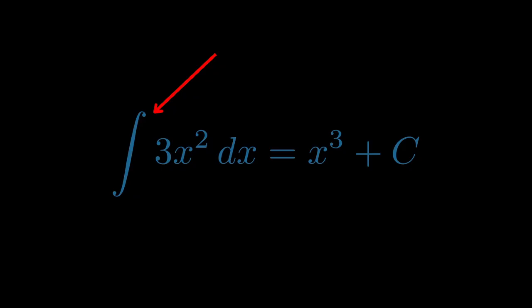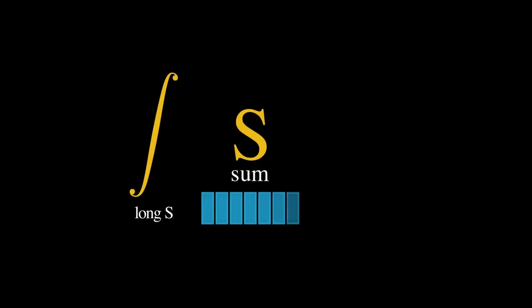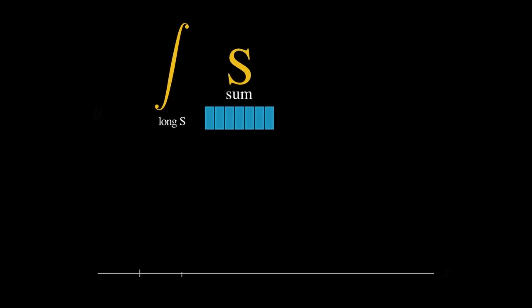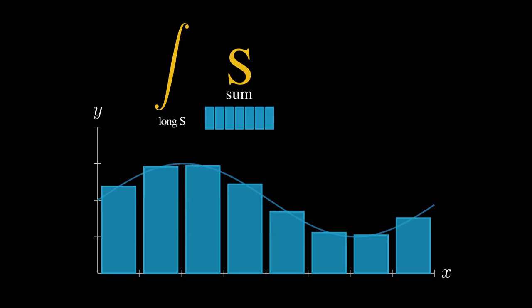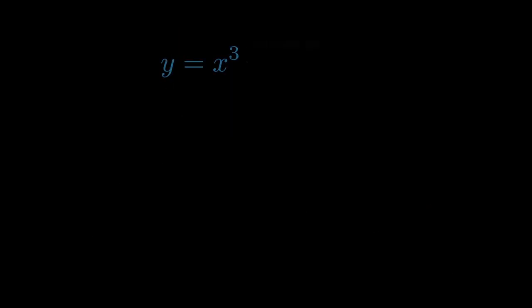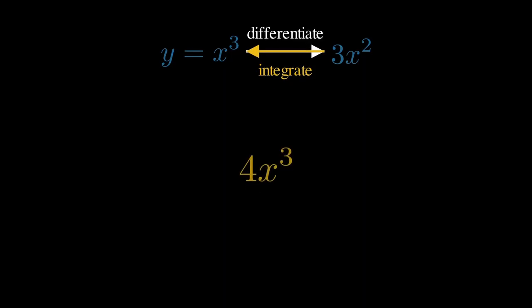In notation form, we write this as the integral of 3x squared dx is equal to x to the power 3 plus c. And that fancy s symbol, that's basically what it is. It's a stretched out s, which stands for sum. Because deep down, that's really all we're doing here. We're just adding up the little bits under the graph. Let's test this out. If differentiating x cubed gives 3x squared, then integrating 3x squared must bring us back to x cubed.